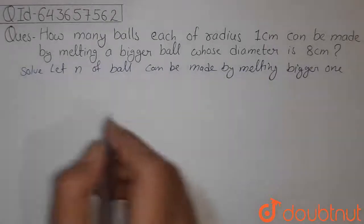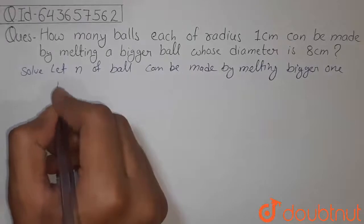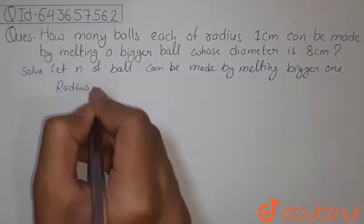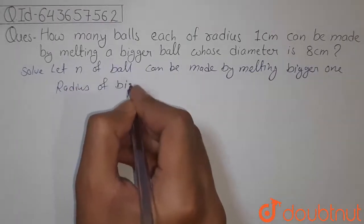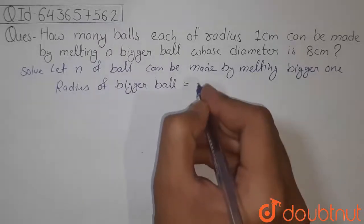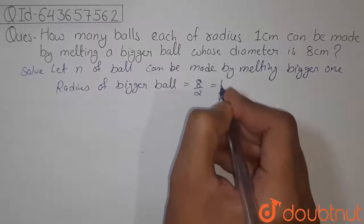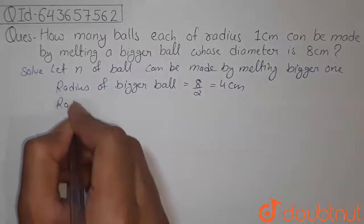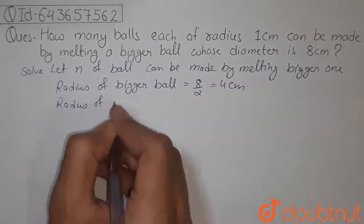The diameter of the bigger ball is given as 8, so the radius of the bigger ball is equal to 8 by 2, that is 4 centimeters. And the radius of small balls is equal to 1 centimeter.